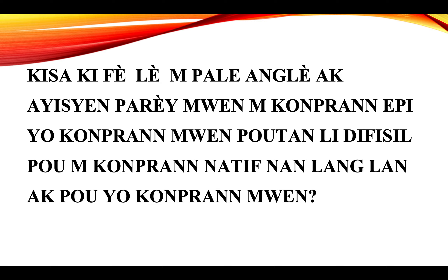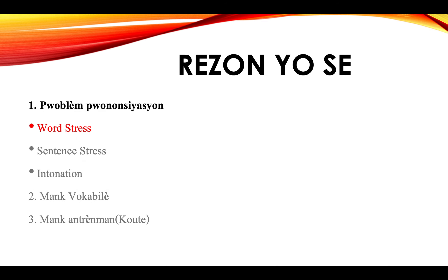E men neseser pou nou aksantue sou sa gen pouwe avek prononsyasyon nan lang sa ki se angle. Kek nan rezon yo se: nimeyo 1, problem prononsyasyon; nimeyo 2, mank vokabilen; e nimeyo 3, mank antrenman ou bien nou pa koute ase. Nan sa gen pouwe avek problem prononsyasyon, nou genye 3 eleman: se word stress, sentence stress, and intonation.